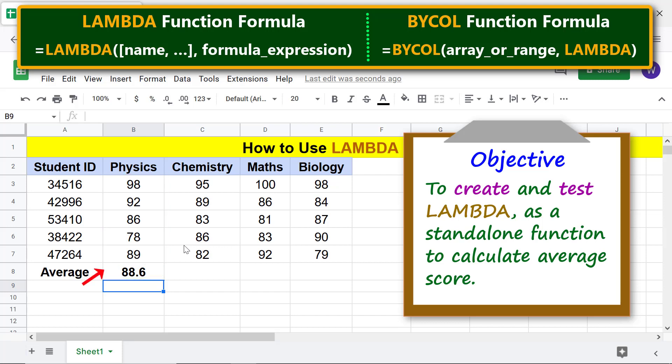Click this cell. Copy this part of the formula by pressing Control and C keys. Moving forward, let's use this LAMBDA in BYCOL function to get the other average scores in one step.